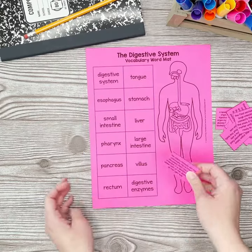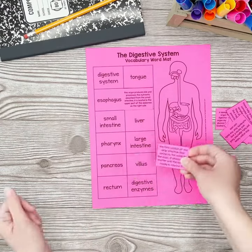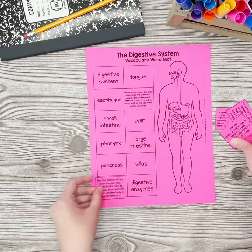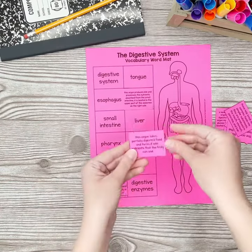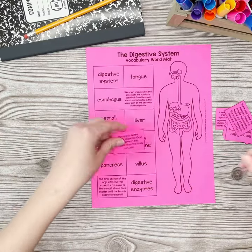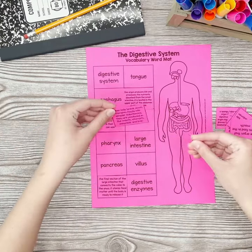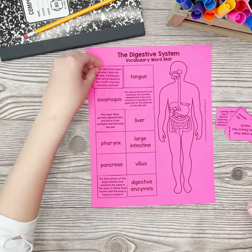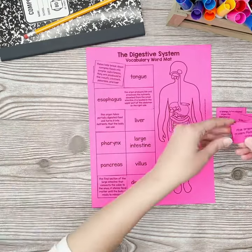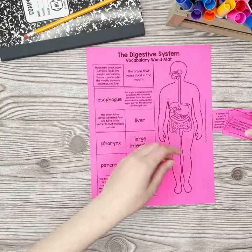Have students leave the word mat intact and cut apart the definitions. To use, students read a definition and place it on the vocabulary term that they think matches. I recommend that students place the definitions face up so that you can see their matches.